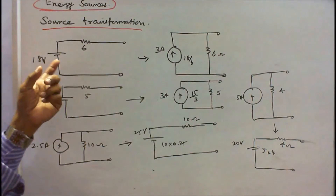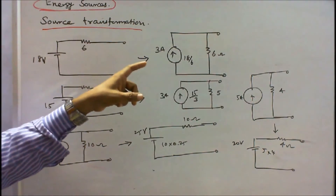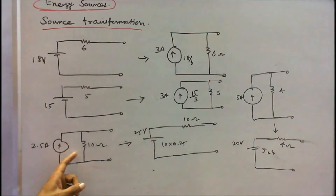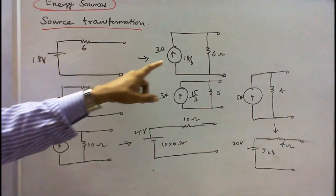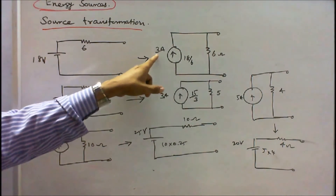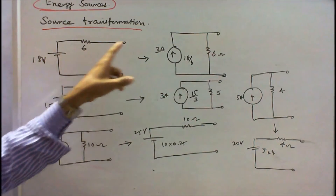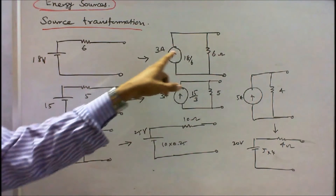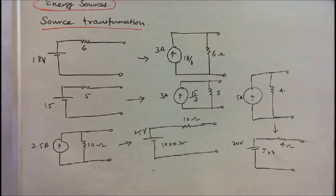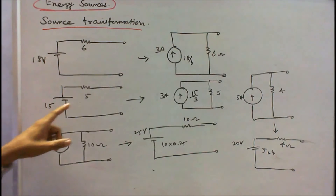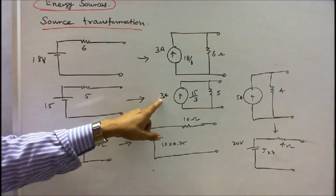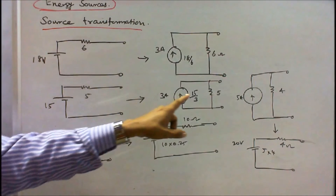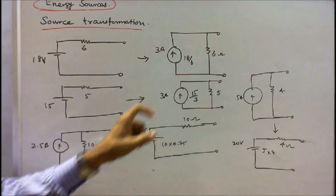Now we see how to convert a voltage source into a current source, and a current source into a voltage source. In the first example, 18 volts with 6 ohms in series: 18 divided by 6 equals 3 amperes, and the 6-ohm resistor is connected in parallel with the current source. In the second example, 15 volts with 5 ohms: 15 divided by 5 equals 3 amperes, and the 5-ohm resistor is connected in parallel with the current source.